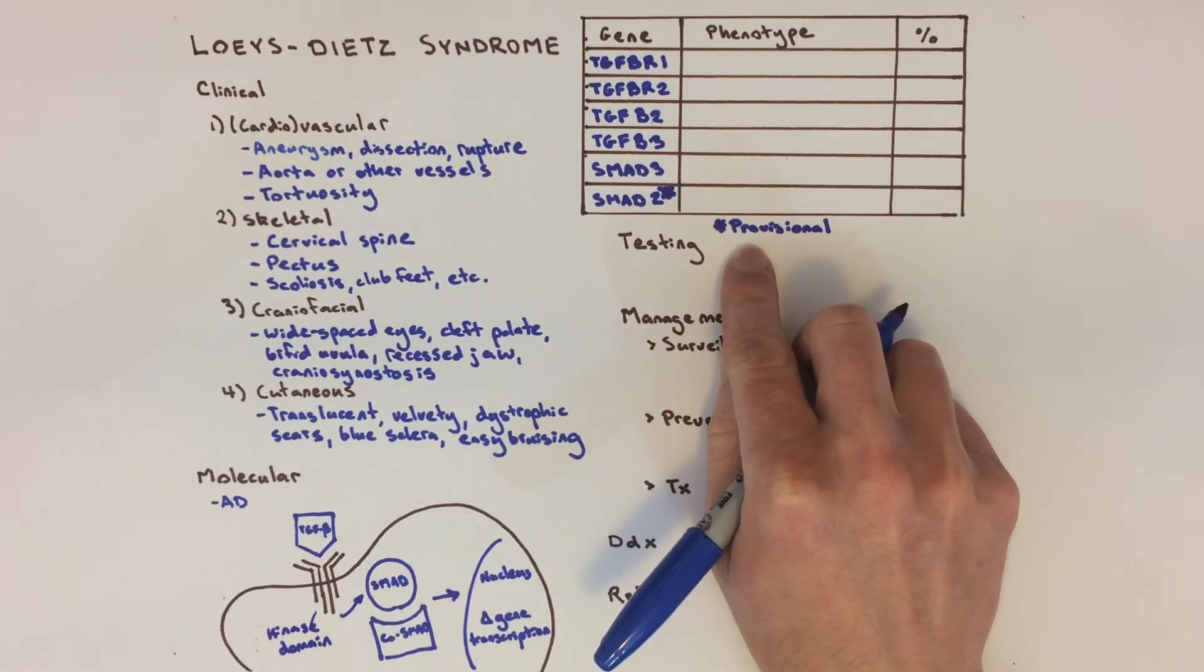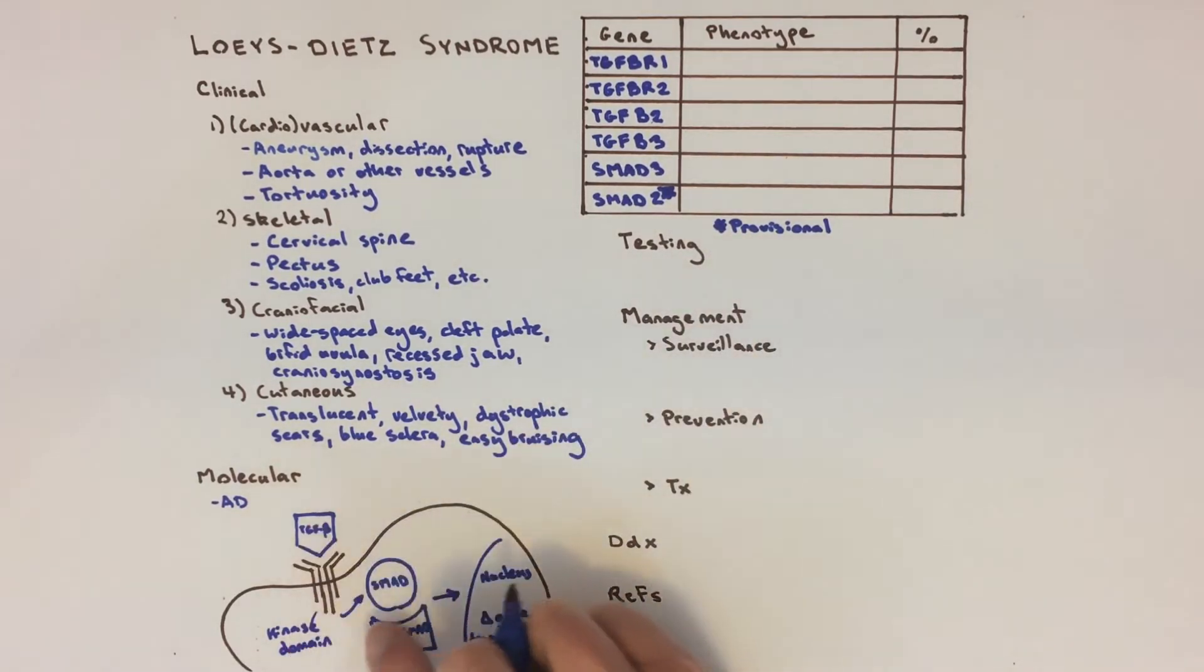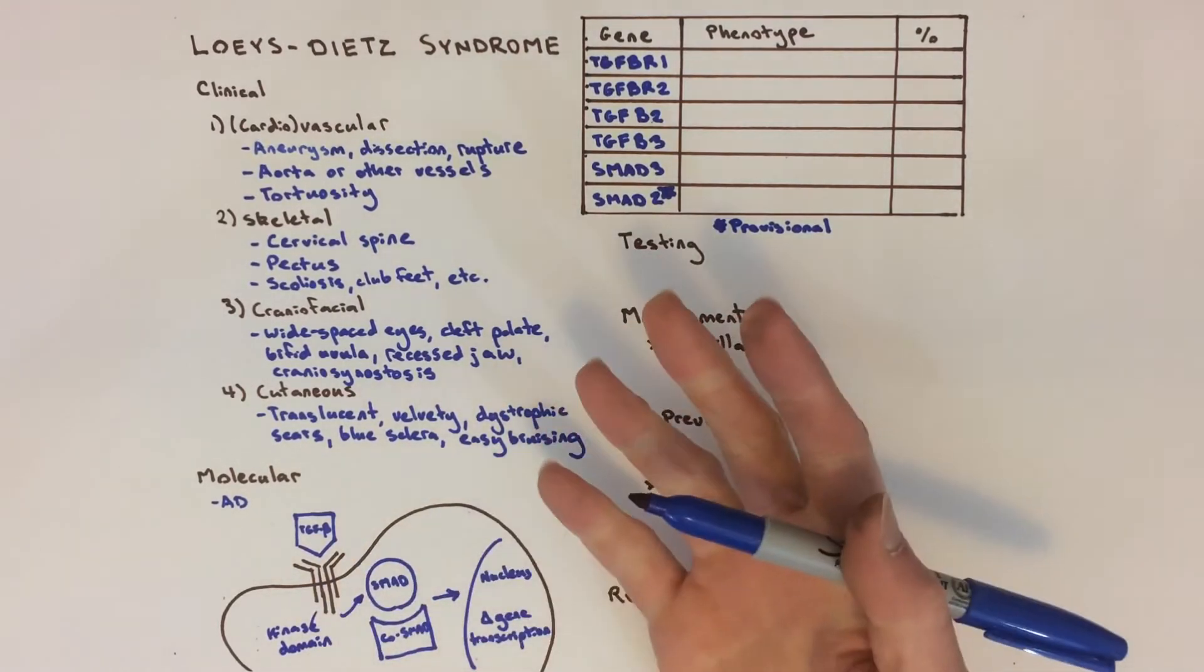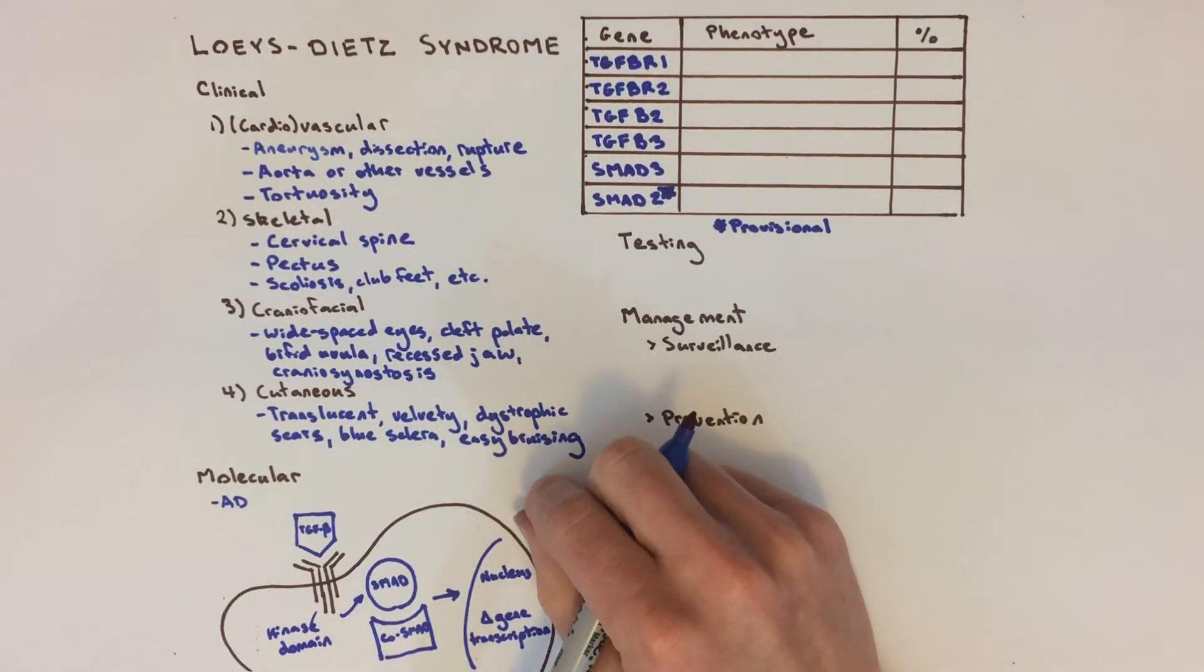It would be reasonable to assume that mutations in these TGF-beta pathway genes would decrease TGF-beta signaling, but in fact, they result in increased TGF-beta signaling. Why this happens isn't yet known.